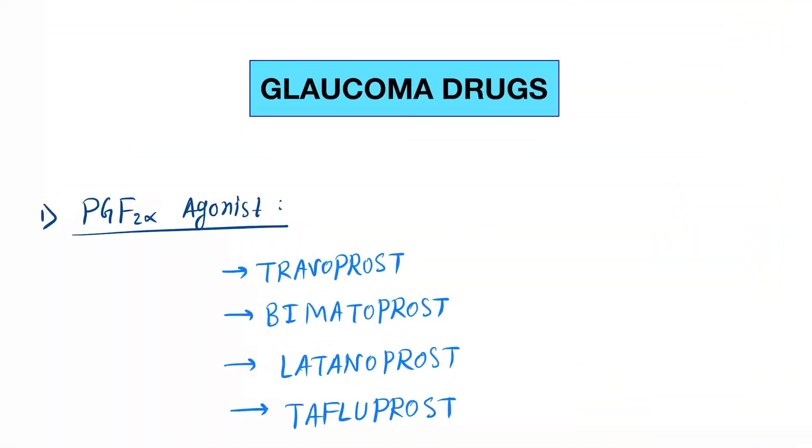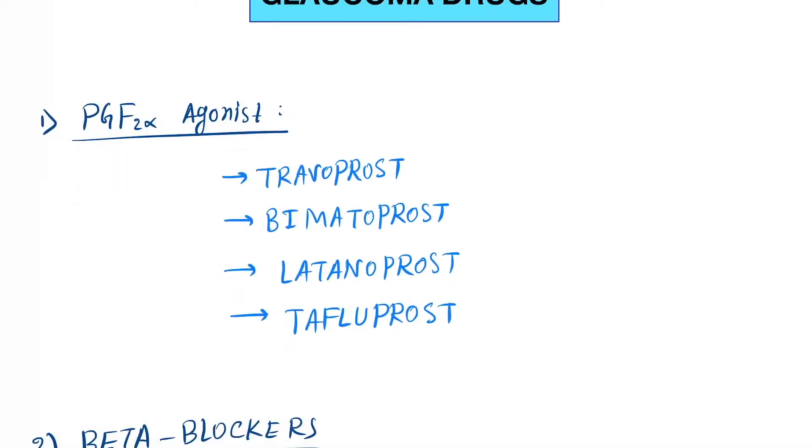Hello friends, today our topic is glaucoma drugs. First is PGF2 alpha agonists. You can remember the mnemonic tra-bi-la-ta: Tra for travoprost, Bi for bimatoprost, La for latanoprost, Ta for tafluprost. PGF2 alpha's mechanism of action is to increase the uvioscleral outflow.